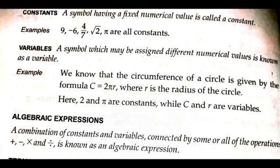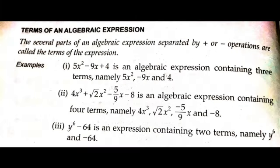Now we are in a position to define algebraic expression. It is defined as a combination of constants and variables connected by some or all mathematical operations — plus, minus, multiplication, and division. This is known as an algebraic expression. The several parts of an algebraic expression separated by plus or minus operations are called the terms of the expression.